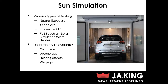We've also got our artificial types of sun simulation testing: xenon arc and fluorescent UV testing, which are both for testing mostly smaller parts and test plaques. And then you've got full spectrum solar simulation using metal halide bulbs, which is useful for testing full vehicles and much larger products. The main reasons we use sun simulation testing are to evaluate color fade, part deterioration, heating effects, and component warpage.